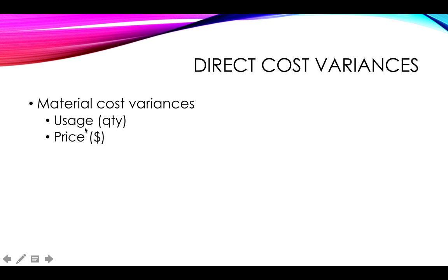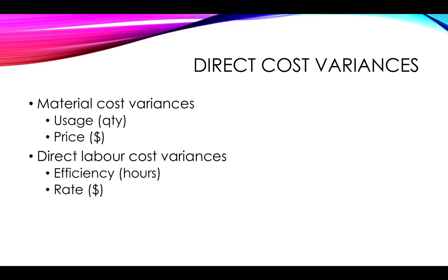However, usage is not the only reason why material costs might vary. Another reason could be a change in price — maybe the price was higher than expected, possibly because you are importing the product and exchange rates changed. In addition, you can have exactly the same sub-variances for direct labour costs, although labelled slightly differently — it is basically the same concept.